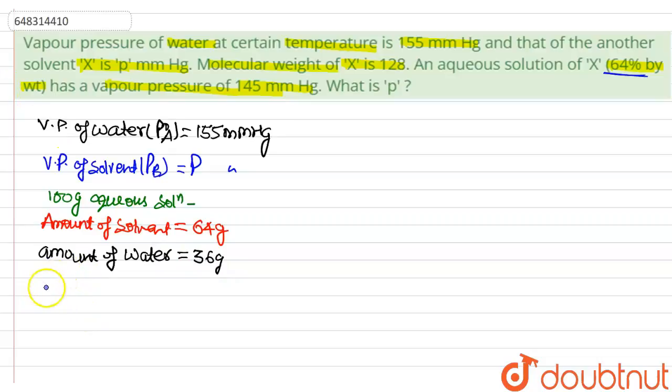By this data, we can calculate the number of moles. nA is the number of moles of water. Number of moles equals weight, 36g, divided by molecular weight, 18g. This equals 2.